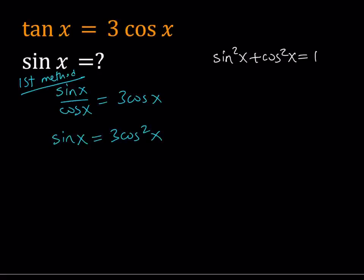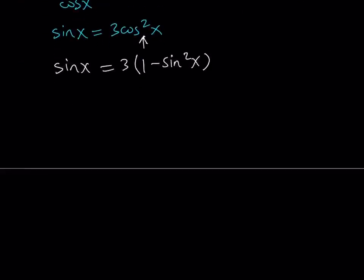Now, here this allows us to write cosine squared in terms of sine squared. So cosine squared equals 1 minus sine squared. And now we can do the substitution here. So let's replace cosine squared with 1 minus sine squared of x. And then distribute.